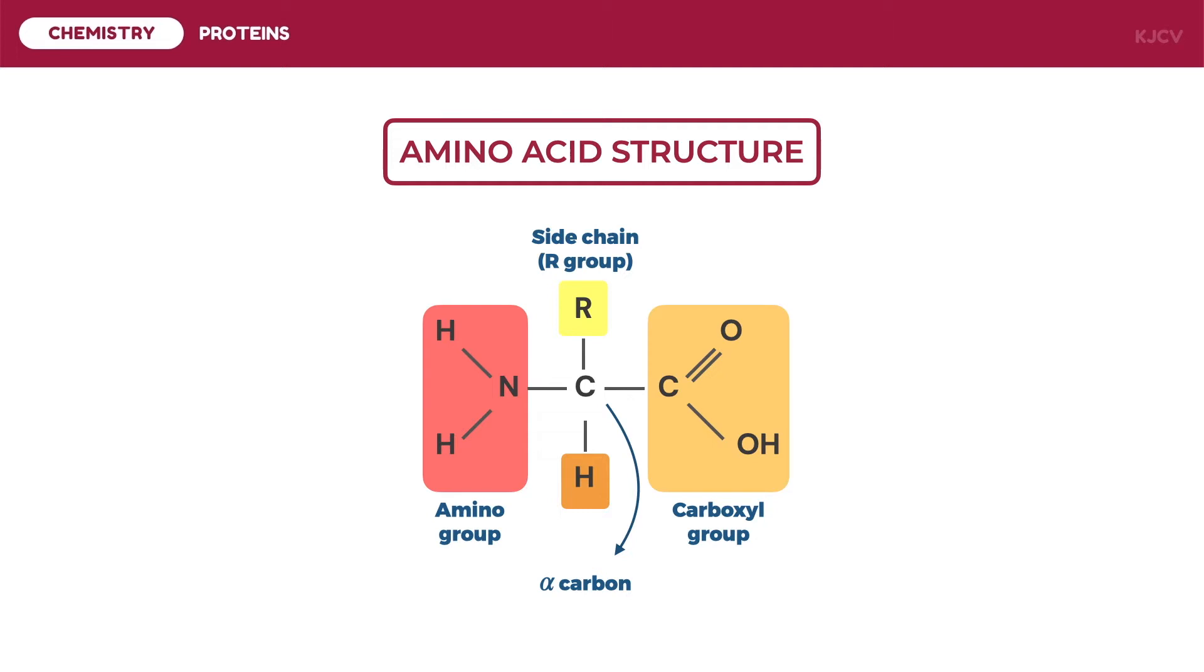All amino acids are the same in the amino group, carboxyl group, and hydrogen attachments. They only differ in the side chain. There are 20 different amino acids and these are classified based on the property of their side chains.